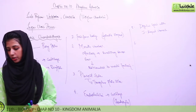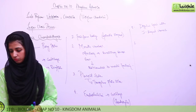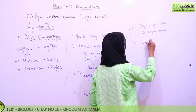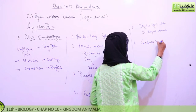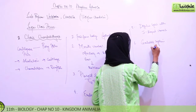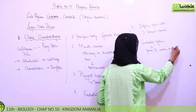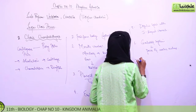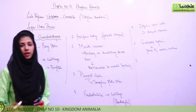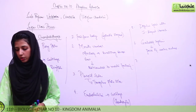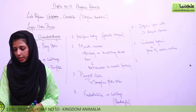Fifth: the circulatory system comprises many pairs of aortic arches. These arches are branches that arise from the ventricle. For respiration, there are five to seven pairs of gills without a covering operculum.